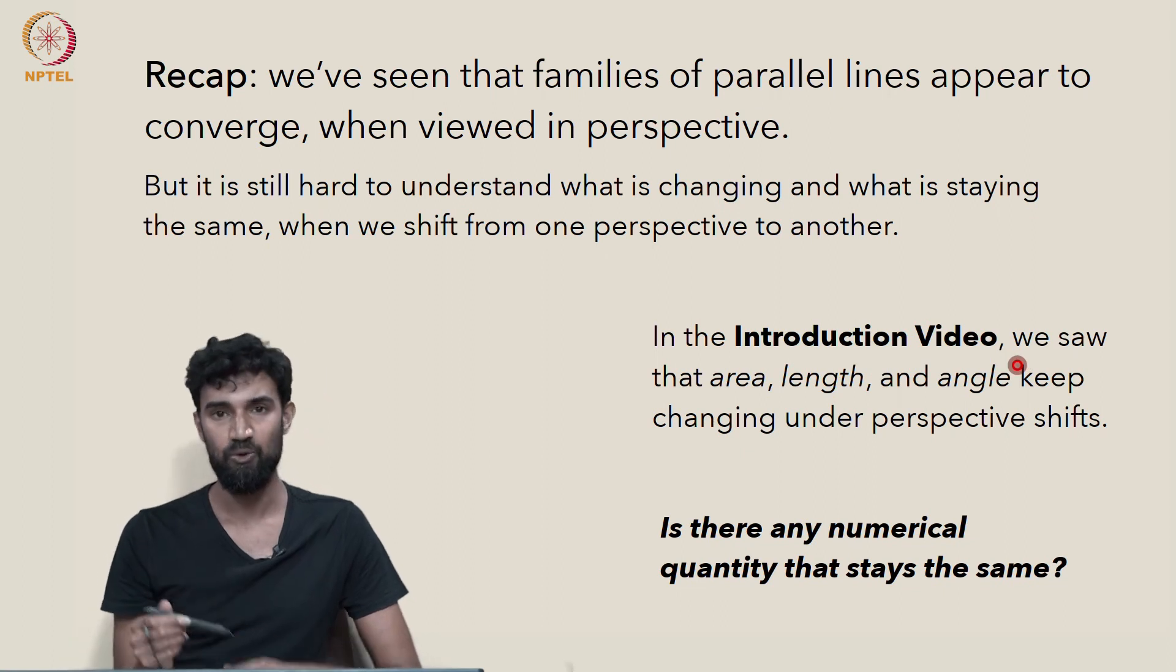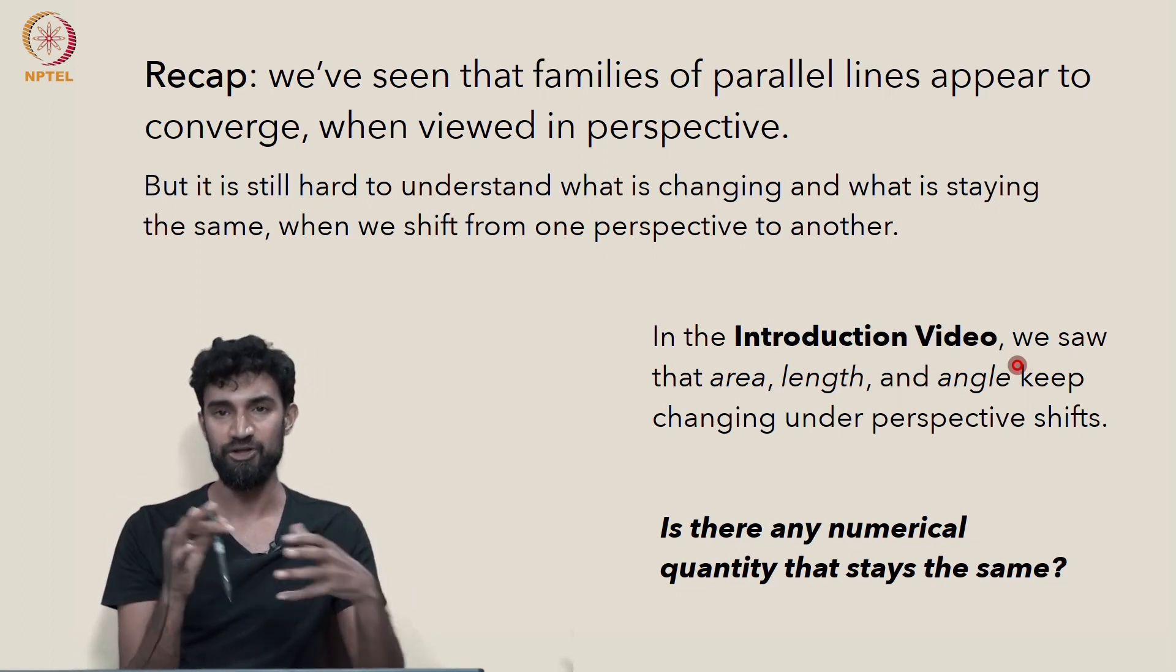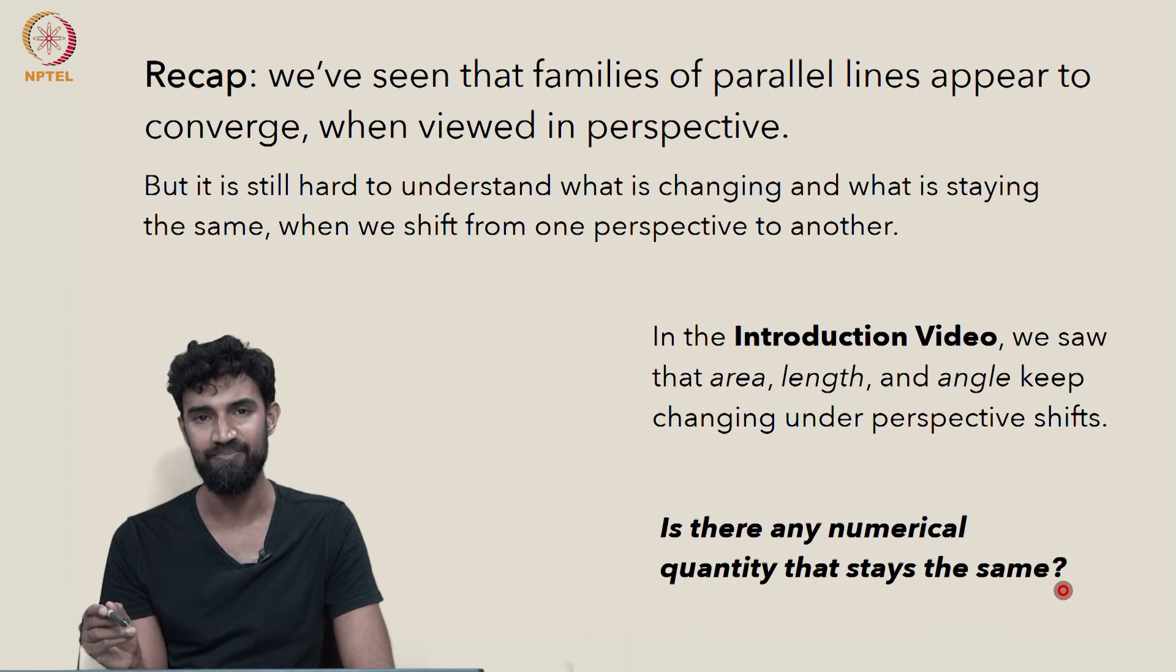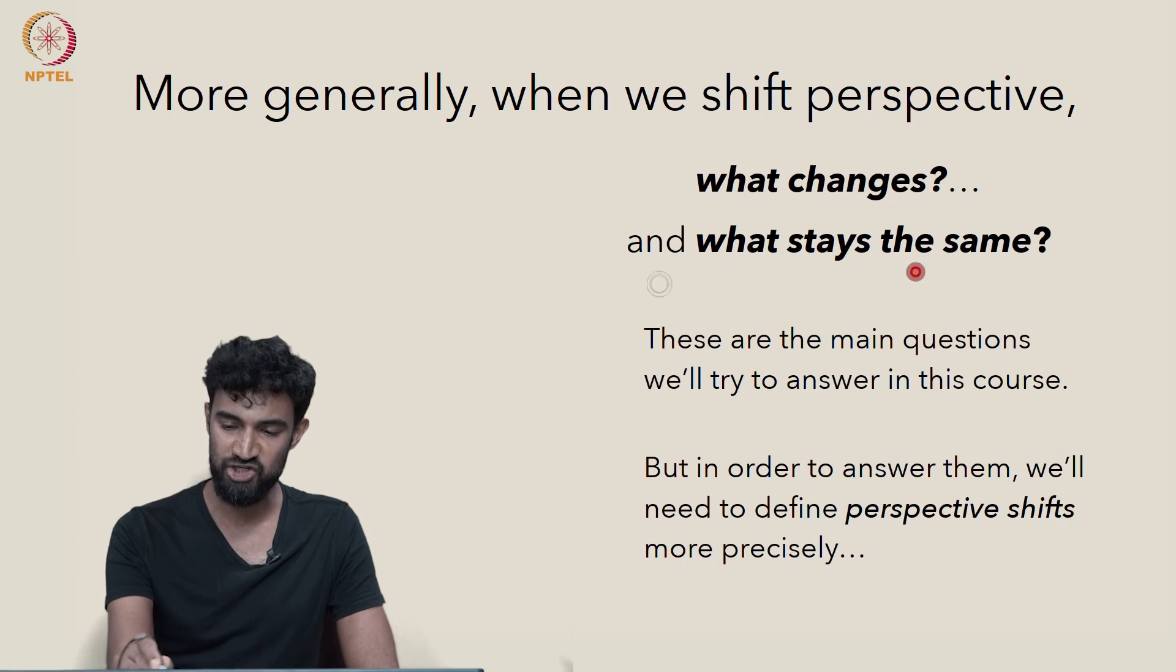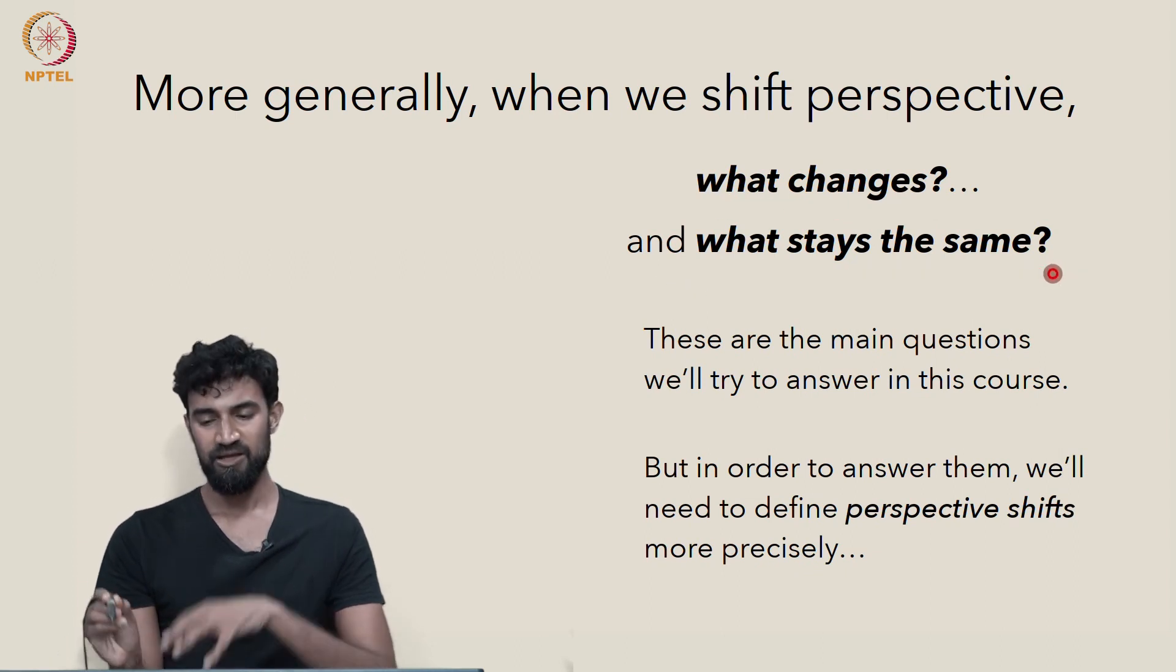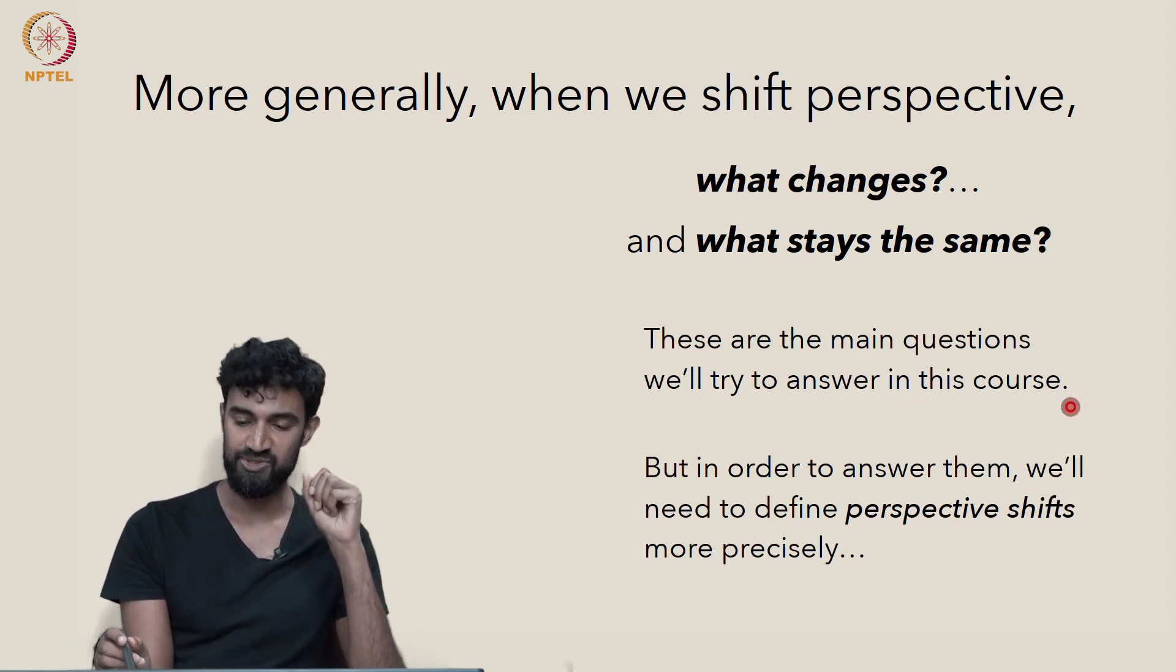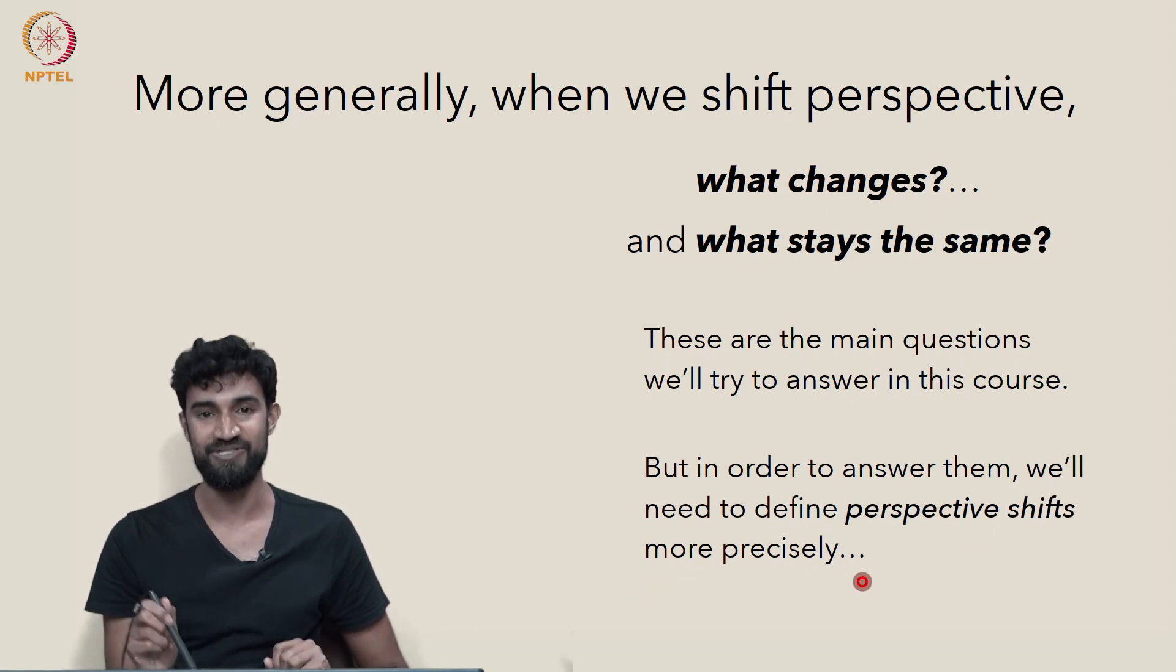In the intro video, we saw that area, length, and angle keep changing under perspective shifts. And we also asked the question, is there any numerical quantity that stays the same? But more generally, in order to really understand what all is changing and what all is staying the same, these are the main questions we want to answer in this course. And in order to understand those, we need to define perspective shifts more precisely. So that's our next task.